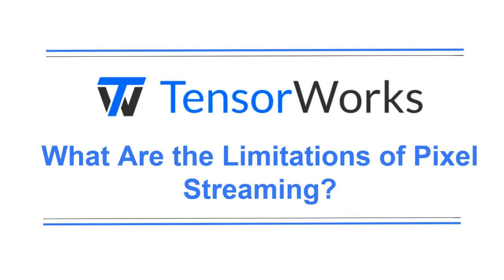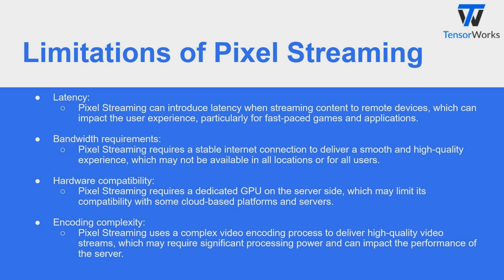What are the limitations of Pixel Streaming? Although Pixel Streaming can help provide greater accessibility to your applications, there are a few elements to keep in mind. These include: Latency — Pixel Streaming can introduce latency when streaming content to remote devices, which can impact the user experience, particularly for fast-paced games and applications. Bandwidth Requirements — Pixel Streaming requires a stable internet connection to deliver a smooth and high-quality experience, which may not be available in all locations or for all users.